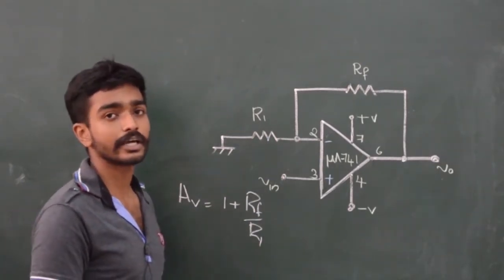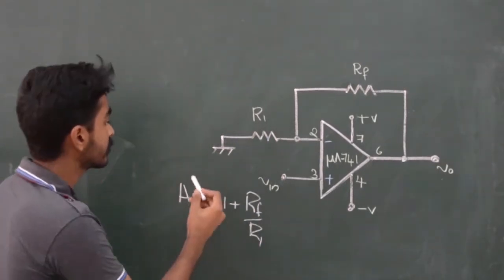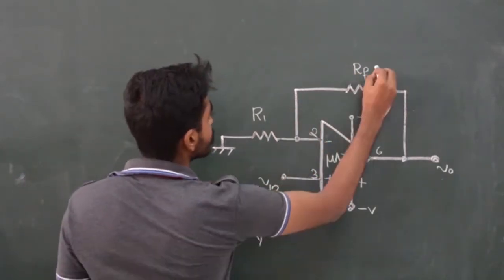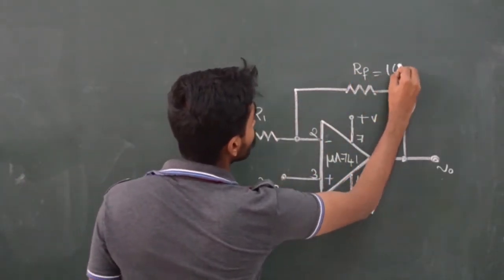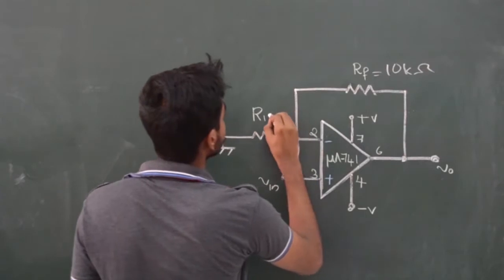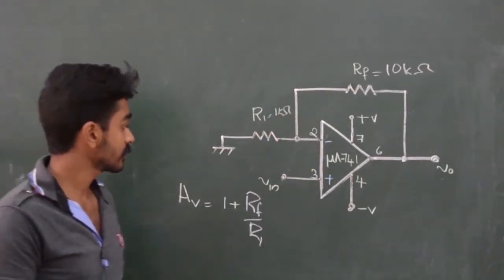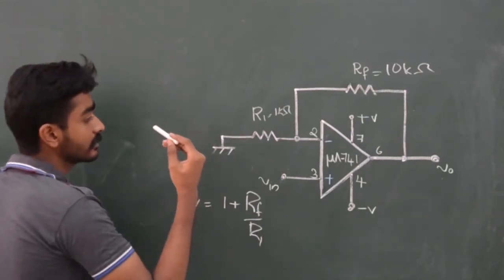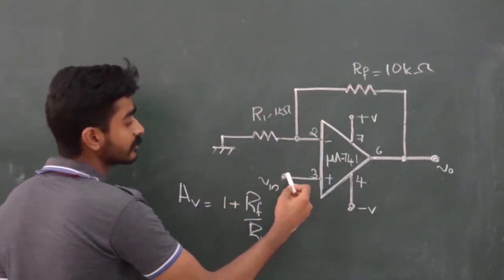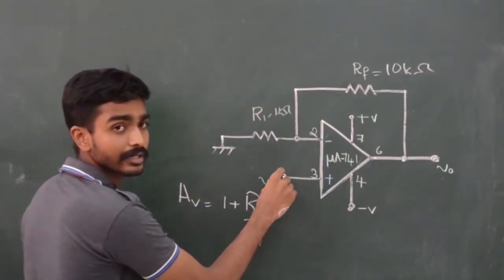For simplicity, we will choose a gain of 11. Then Rf would be equal to 10k ohm if we select R1 equal to 1k ohm. That is when the output would be 11 times that of the input applied at terminal 3.